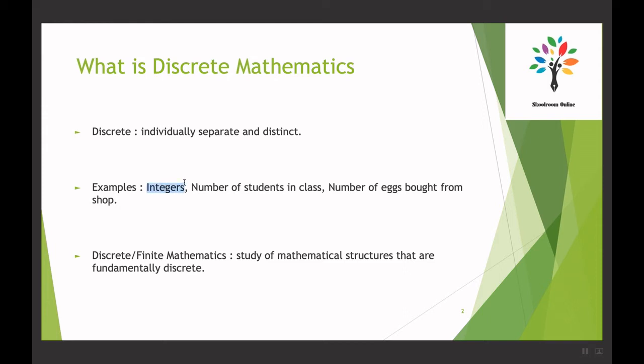Another example similar to integers is the number of students in a class. The number of students will always be an integer value — it won't be a rational or fractional value. We can't have 5.5 students in a class; we'll have 5, 6, or 10 students and so on. Similarly, the number of eggs bought from a shop: you can buy 1 egg, 2 eggs — you can't buy 1.5 eggs. So that nature is discrete.